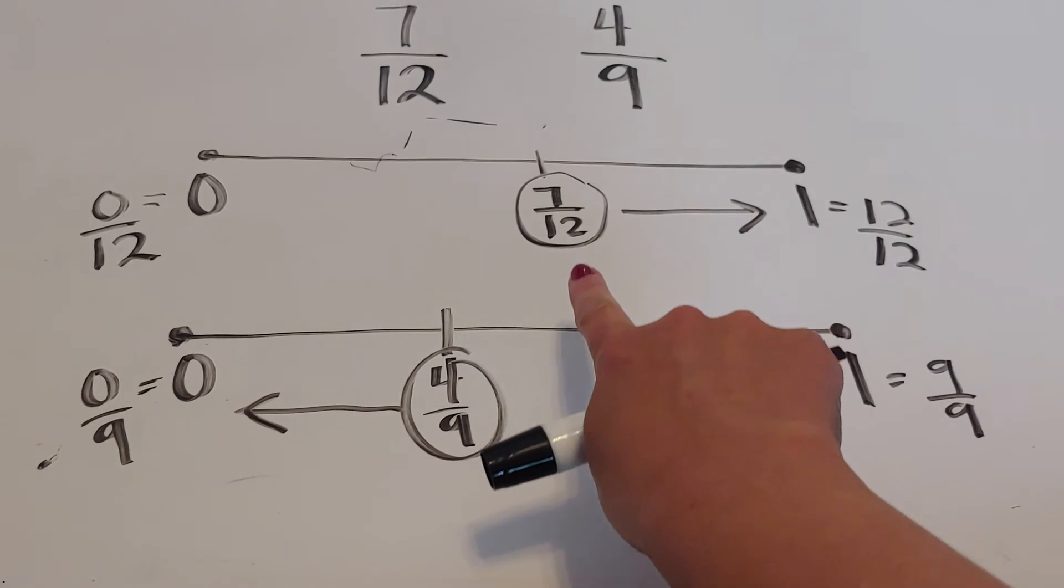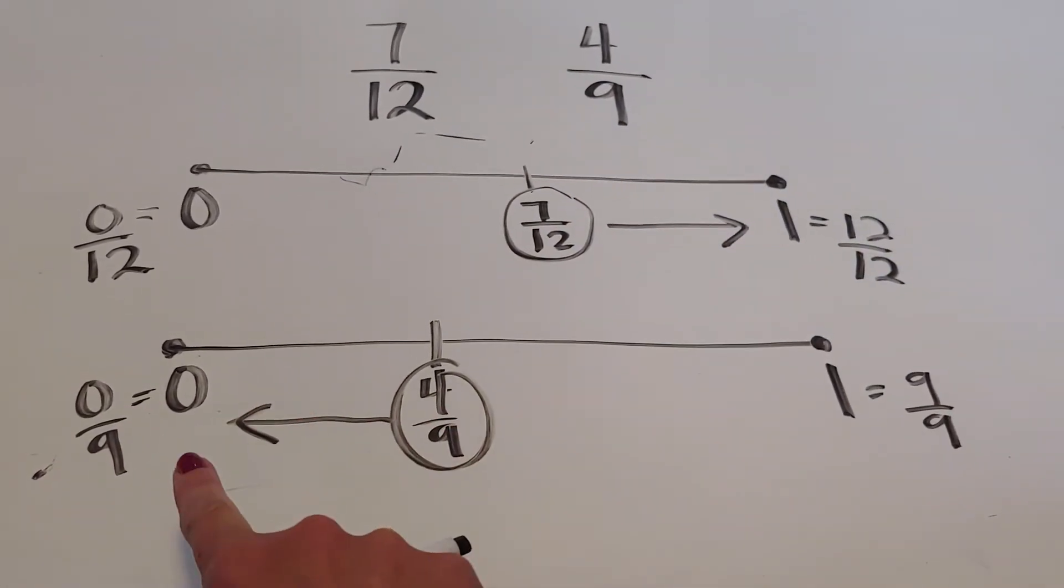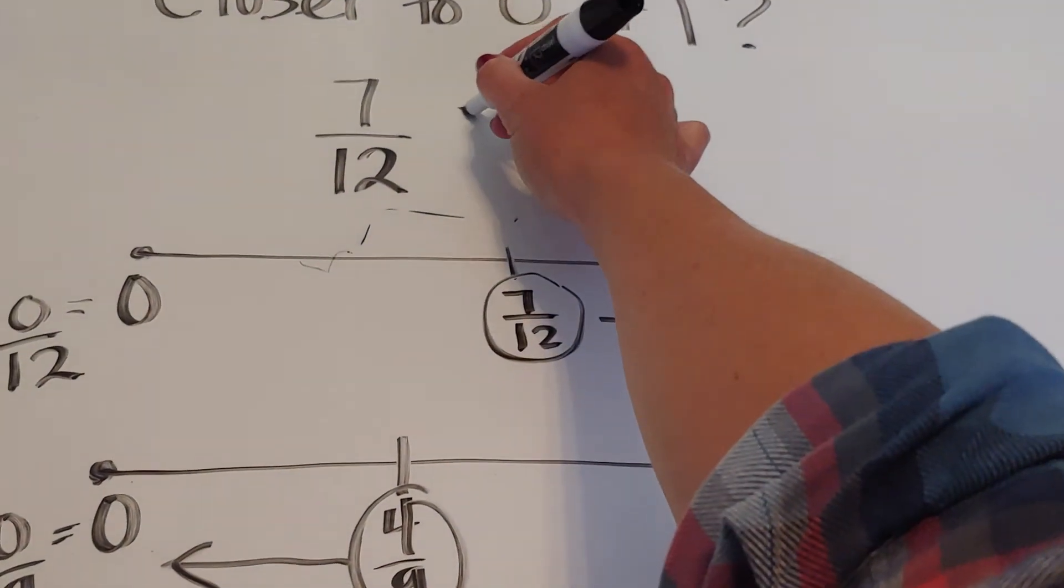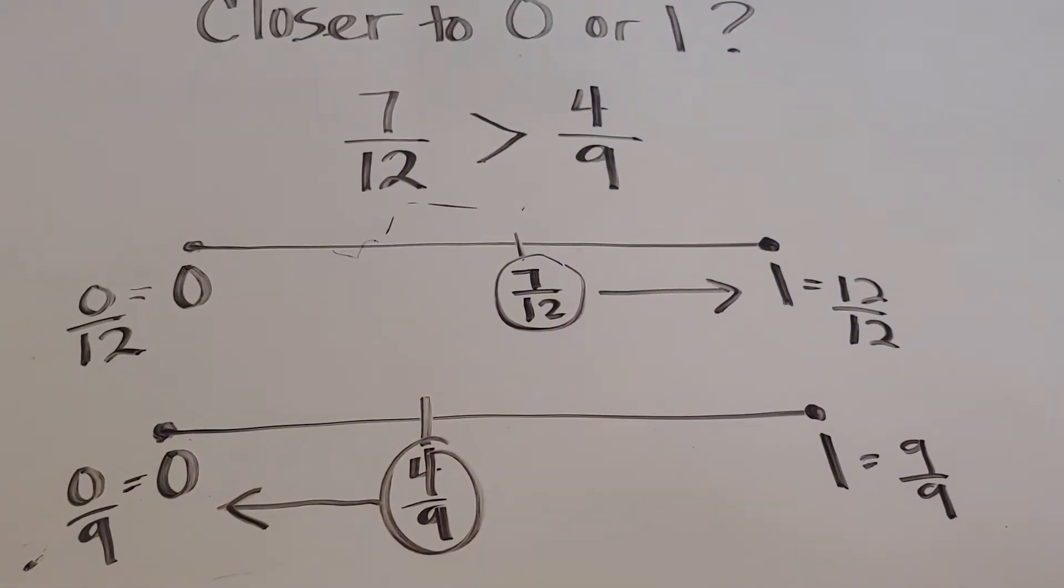So seven twelfths is closer to one, four ninths closer to zero. Therefore, seven twelfths is bigger than four ninths.